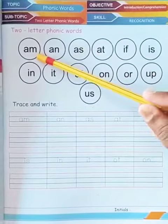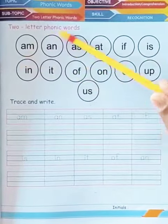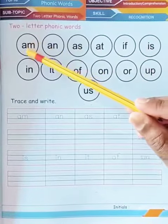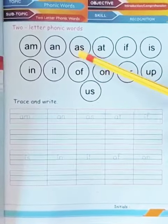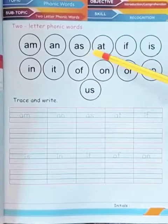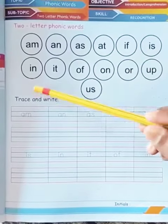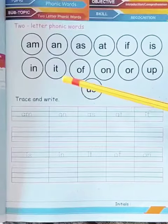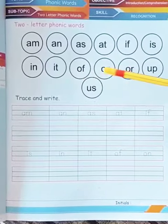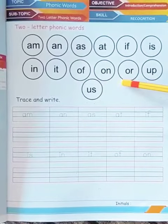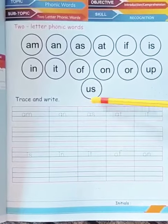You have to learn these words and try to read the words. A M am, A N an, A S as, A T at, I F if, I S is, I N in, I T it, O F of, O N on, O R or, U P up, and U S us.